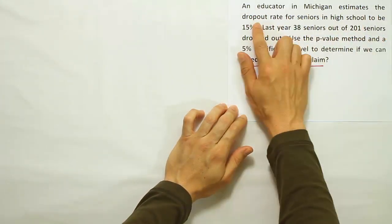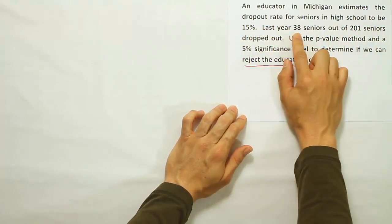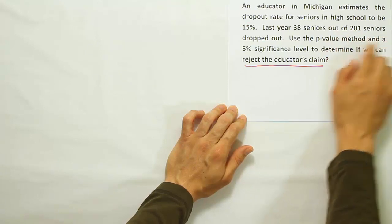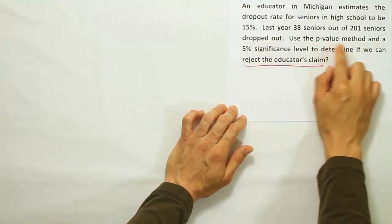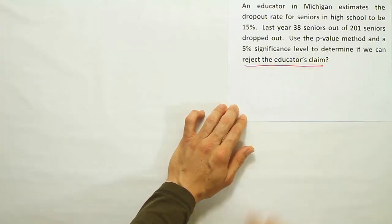An educator in Michigan estimates the dropout rate for seniors in high school to be 15%. Last year, 38 seniors out of 201 seniors dropped out. Use the p-value method and a 5% significance level to determine if we can reject the educator's claim.